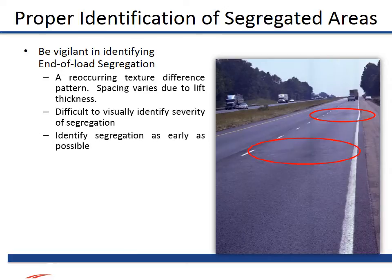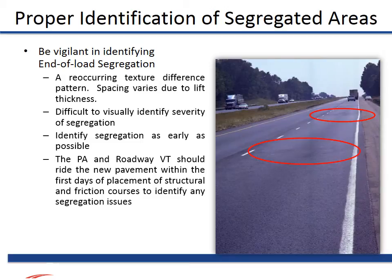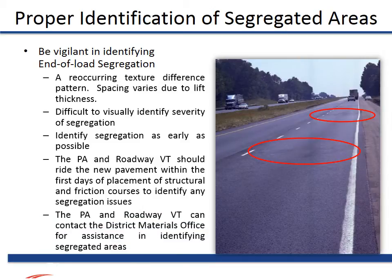Segregation must be identified as early as possible during pavement construction to minimize the reoccurrence and to allow the contractor to make corrections to his pavement operations. The PA and the Roadway VT should ride the new pavement within the first few days of placement to identify segregation issues, and can contact the District Materials Office for assistance in identifying segregated areas.